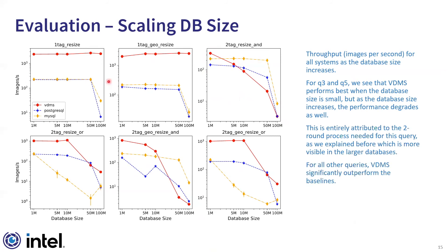For the first two queries, as well as Query 4 and Query 6 — with the exception of the 50 million case — we clearly see that VDMS outperforms the baseline systems when retrieving visual data and applying operations. This is one of the most important findings, as it validates the design principles of VDMS, which aims to provide scalability and performance acceleration.